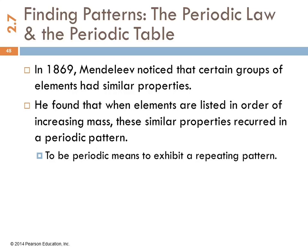So he noticed that certain groups of elements had similar properties. And he found that if he took these elements and listed them in order of increasing mass, the properties appeared in a periodic pattern. To be periodic means to exhibit a repeating pattern. Do you know what they have in the periodical section of the library? They have magazines and newspapers. Those things are published periodically. Some newspapers every week, some magazines every month. So it's a regular repeating thing.